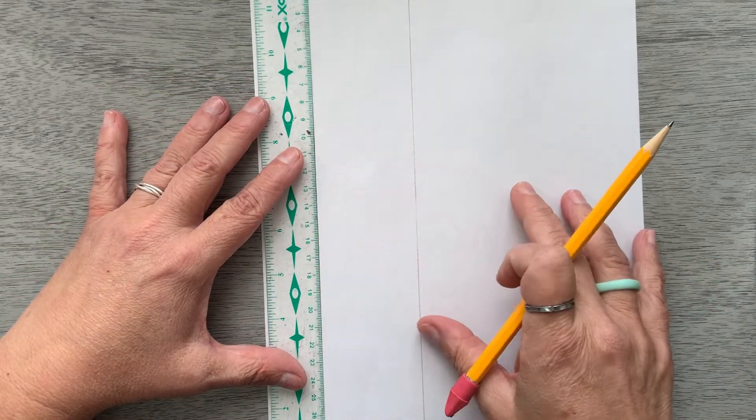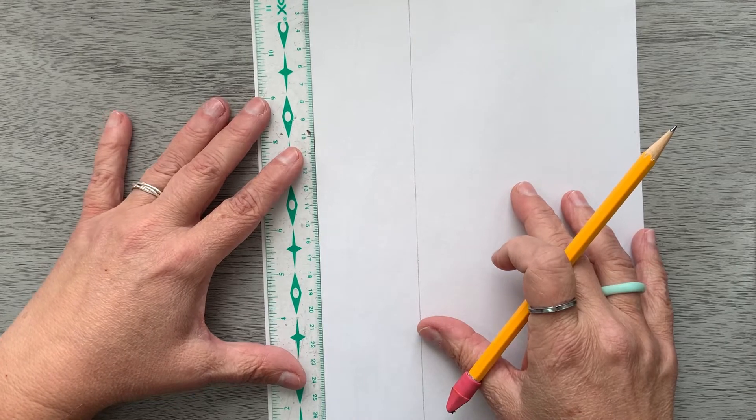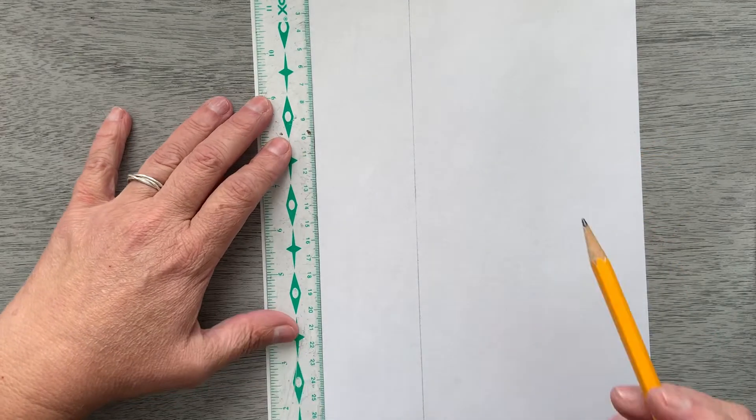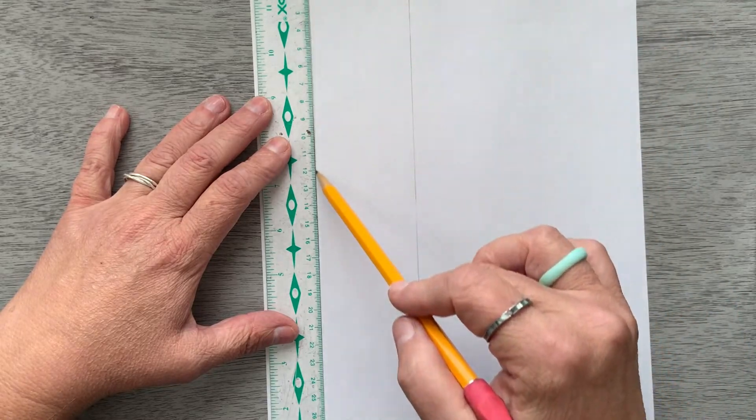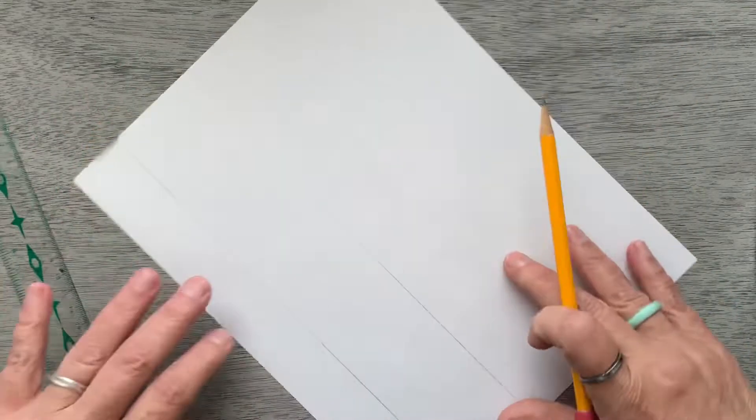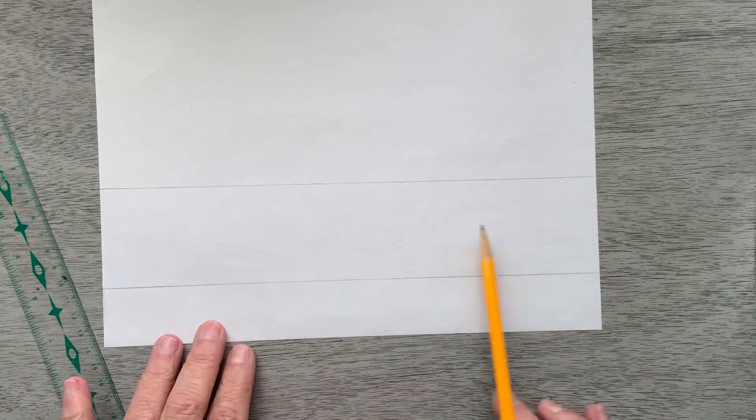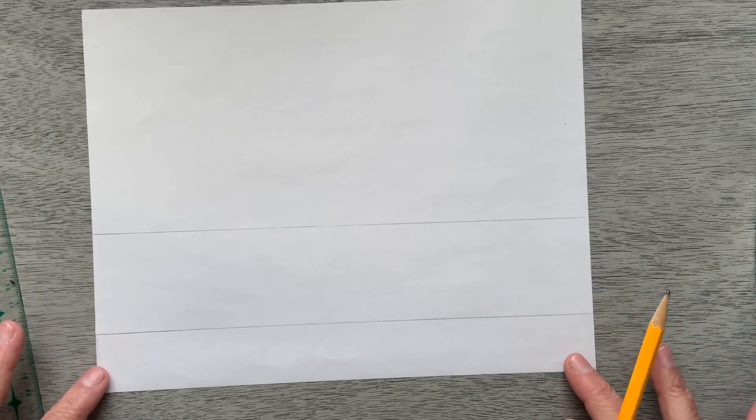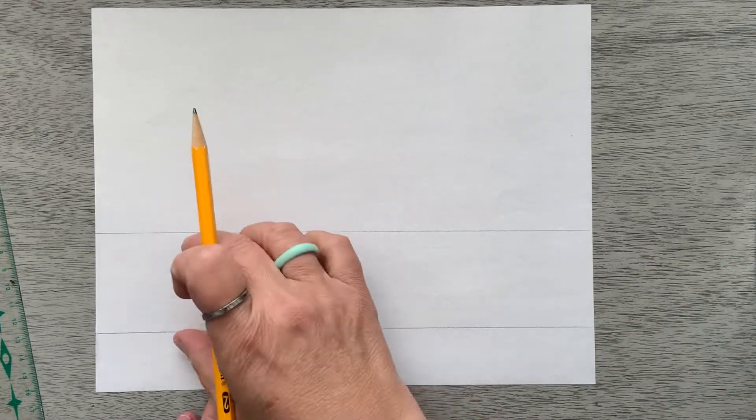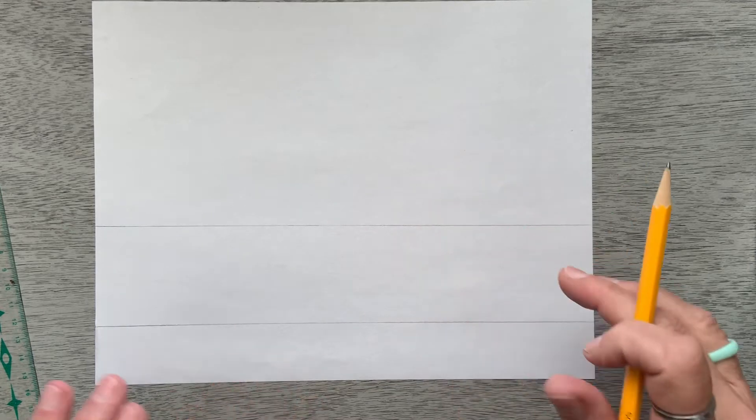Then I figure out how tall I want my letters to be. I move my ruler, hold it down, pencil, scoot it up to the top, draw my next line. So now I know where my letters are going to go. This is how tall I want them. Now I have to figure out how to center them, right? If I want them in the center of the paper with the same amount of space on either side.